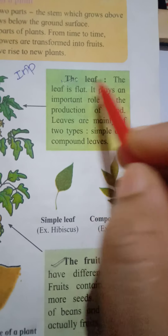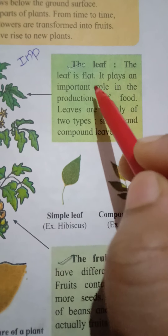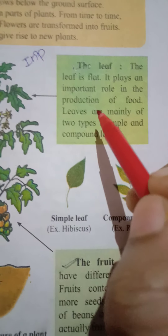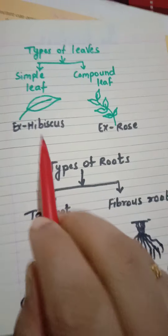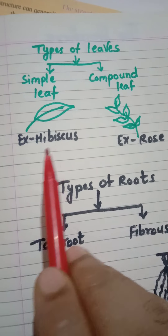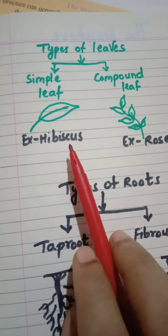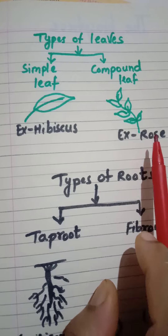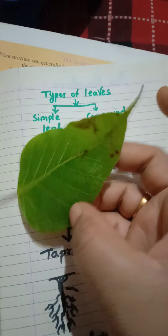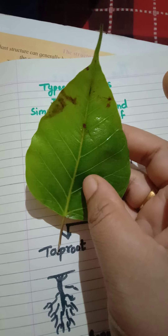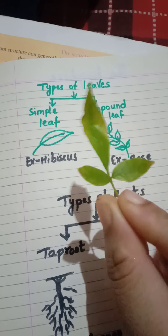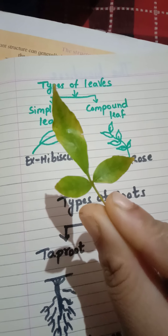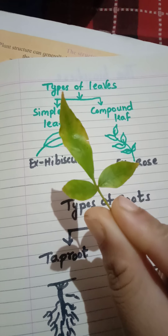Next, the leaf. The leaf is flat and plays an important role in the production of food. Leaves are mainly of two types: simple and compound. For example, the hibiscus leaf and the peepal tree leaf are simple leaves. This other one here is an example of a compound leaf.